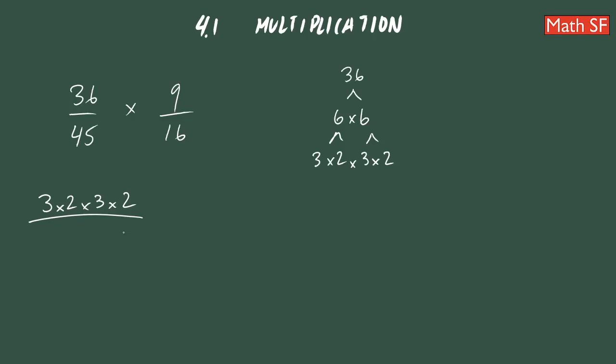But instead of writing 45, we need to write it as a product of prime numbers. So let's get the 45 and break it down. 45 is 5 times 9. And 5 is just 5. This 9 can be breaking down as a 3 times 3. Therefore, instead of writing 45, we are going to write 5 times 3 times 3.